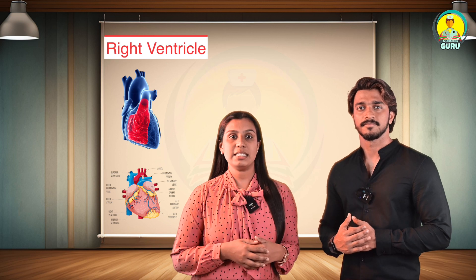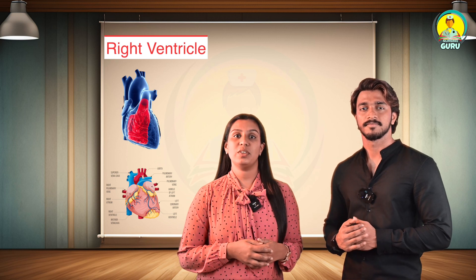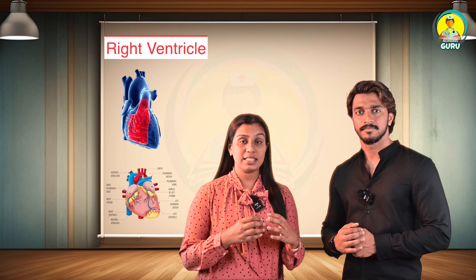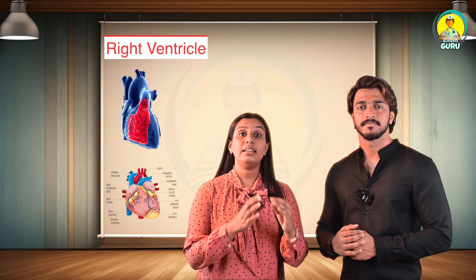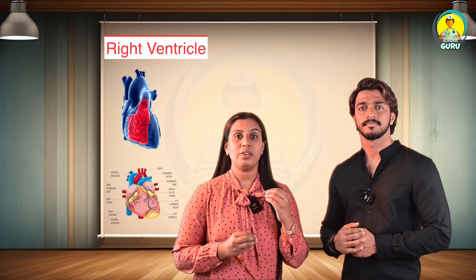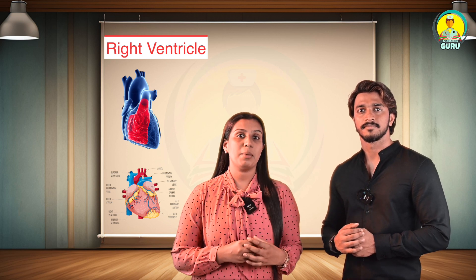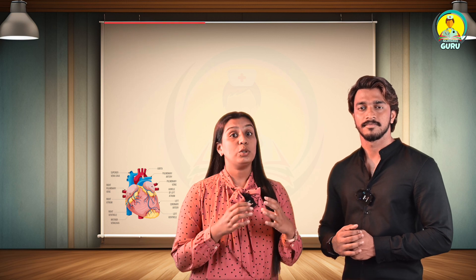The right ventricle communicates with the right atrium through the AV orifice and with the pulmonary trunk through its orifice. It receives blood from the right atrium and pumps it to the lungs through the pulmonary trunk. The left atrium consists of a main cavity and a left auricle, situated behind the right atrium.